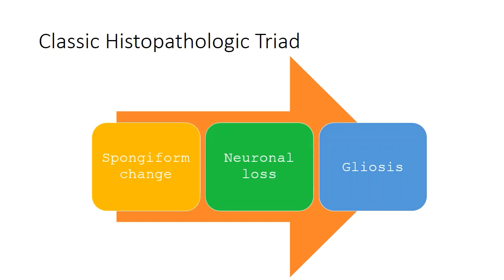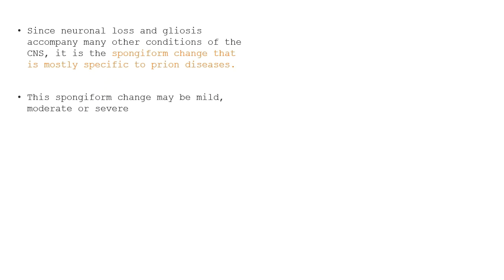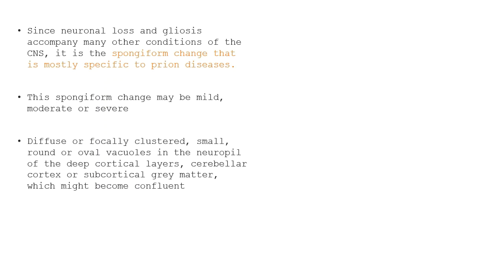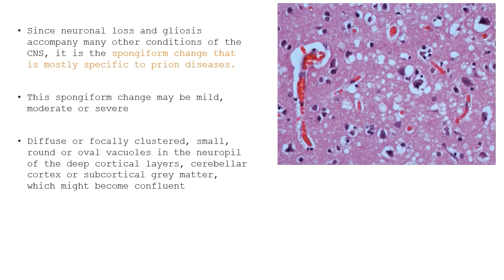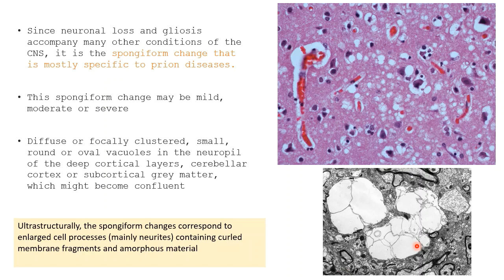The classical histopathological triad of prion diseases includes spongiform change, neuronal loss, and gliosis. Spongiform change is very specific — neuronal loss and gliosis can be seen in other conditions as well. Spongiform change can be mild, moderate, or severe. Diffuse or focally clustered small round vacuoles in the neuropil are characteristic of prion diseases; these vacuoles can also become confluent. Ultrastructurally, the spongiform change corresponds to enlarged cell processes of neurites containing curled membrane fragments and amorphous material.